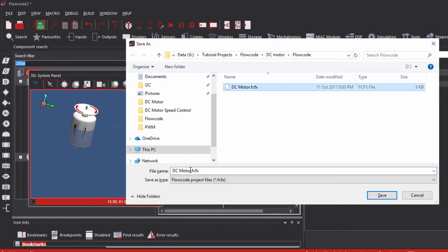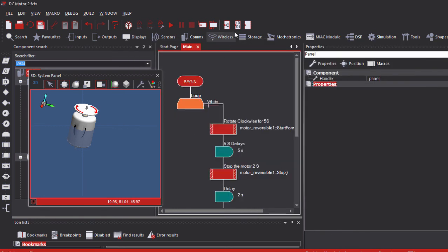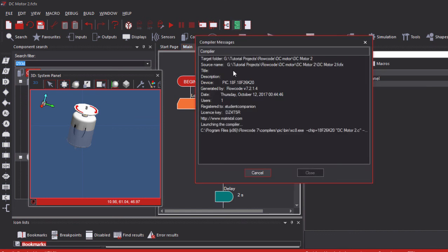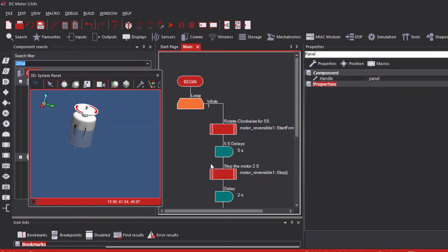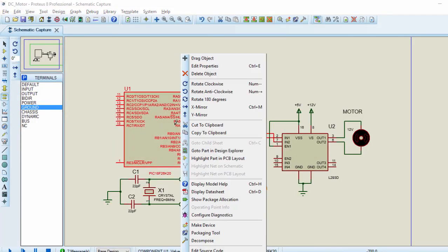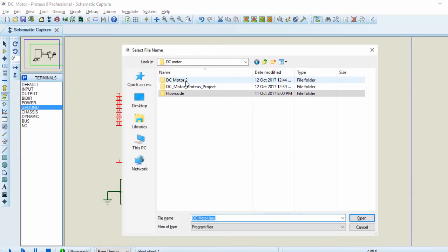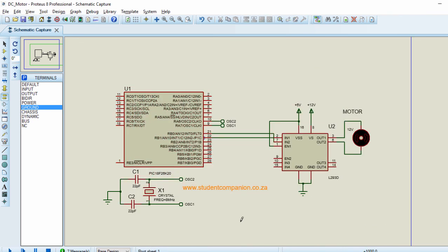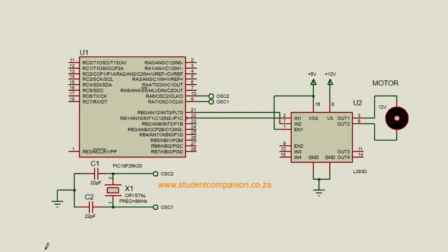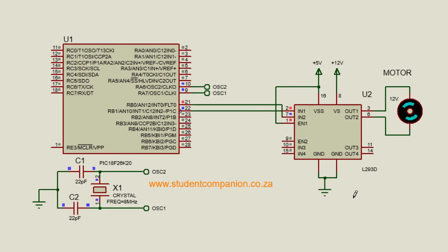Let me save my project. I'm going to name it DC motor. Save. We compile to hex. Close. Let us go to Proteus simulation. Edit. DC motor 2. Open. OK. Run.